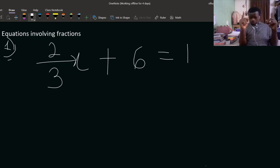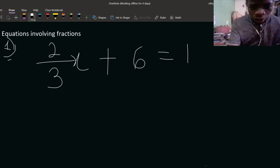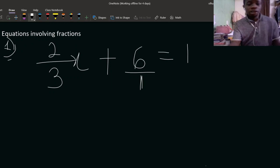So how do we get that done? You know I can write two over three x plus six as two over three x plus six over one. Yeah, the same thing as six. So I can find the LCM of the denominators, that is the LCM of three and one.